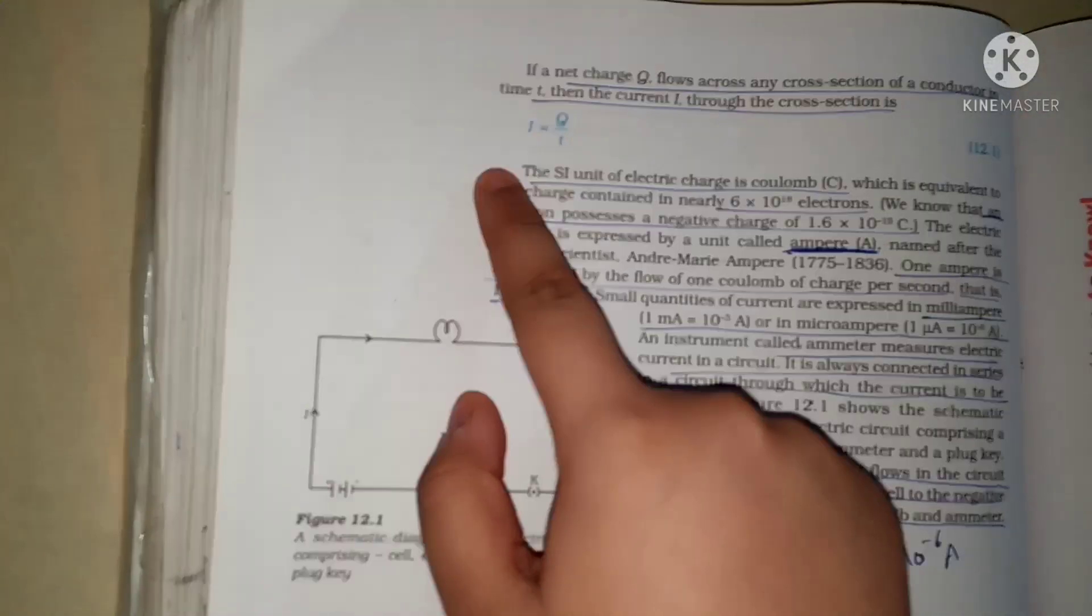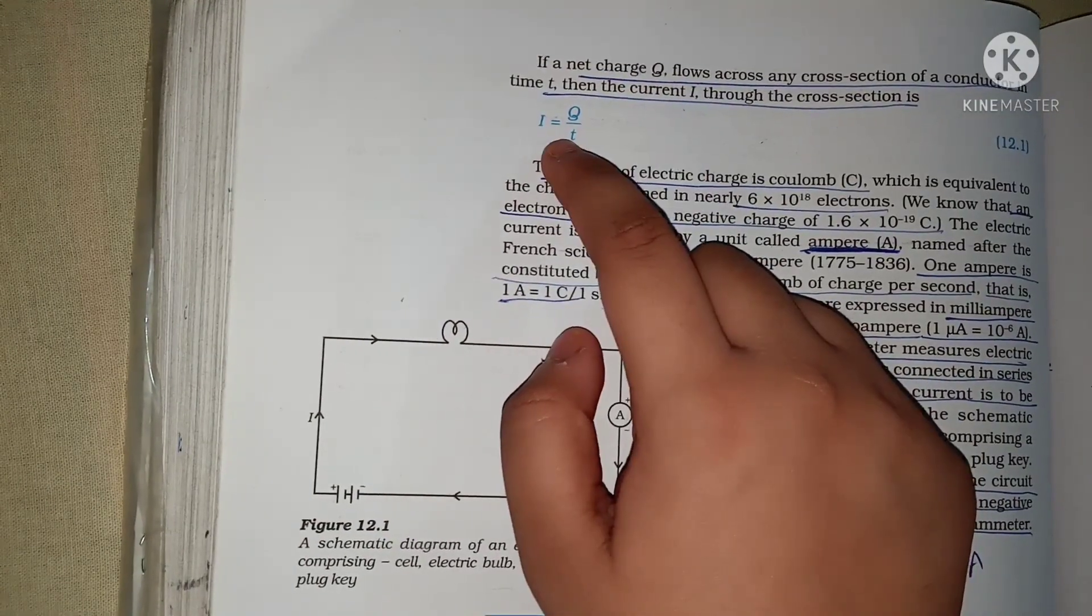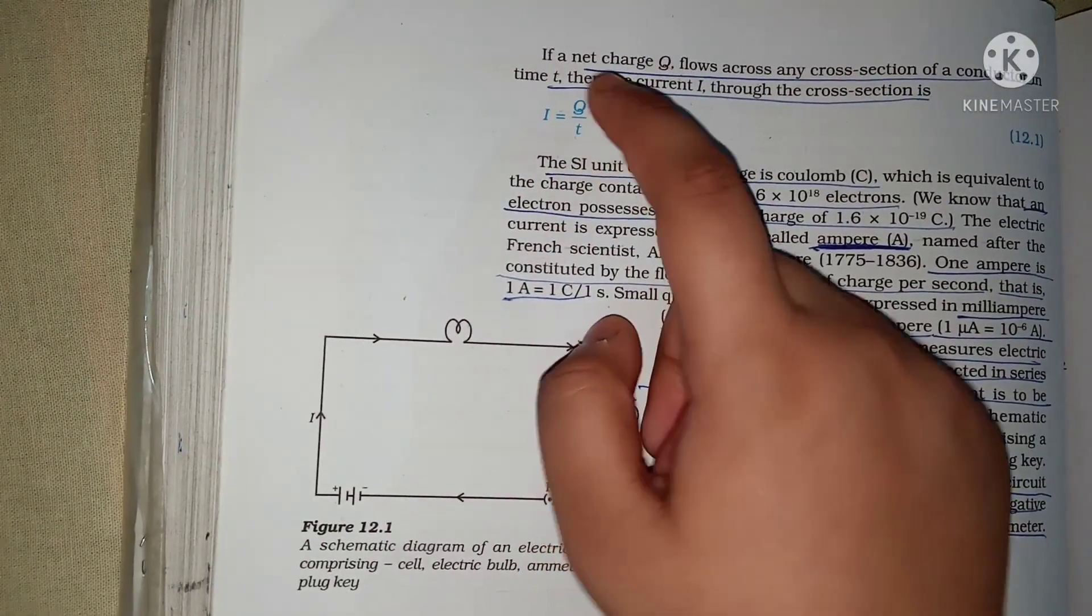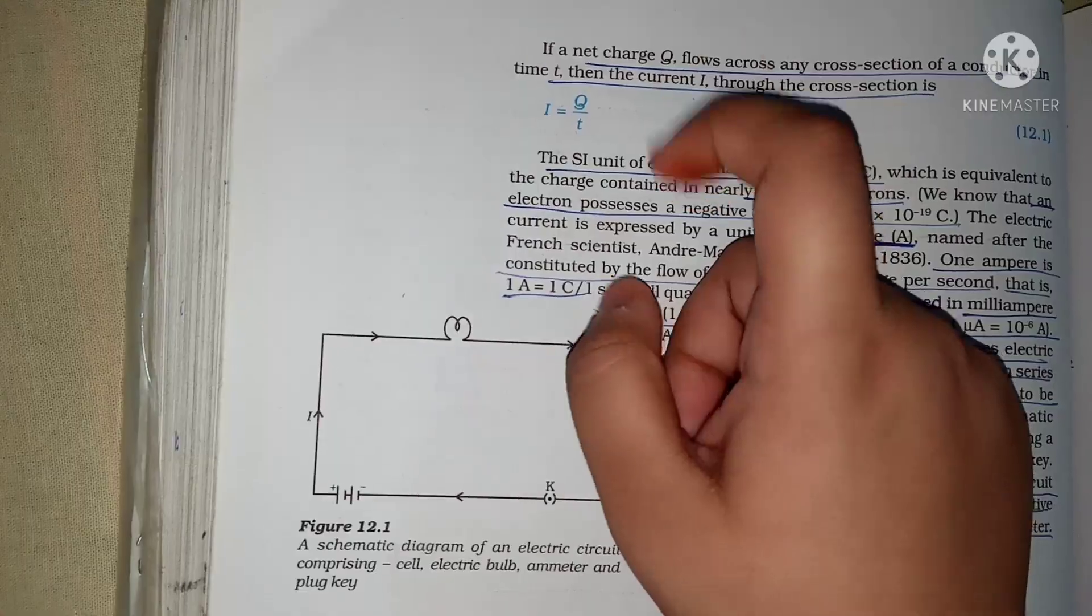So, dekhe, I kya hota hai current, Q hota hai charges, aur T hota hai time. So, I is equal to Q upon T. Kitne time mein kitne charge flow karta hai, bas ye hota hai hamara current.